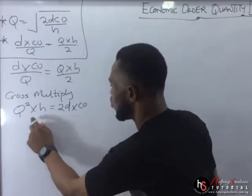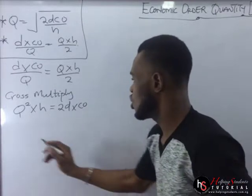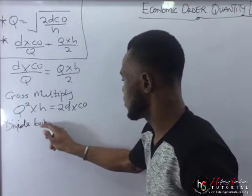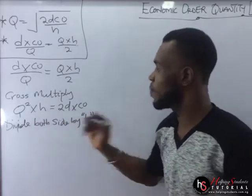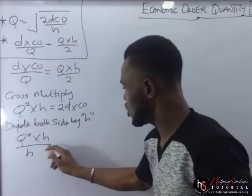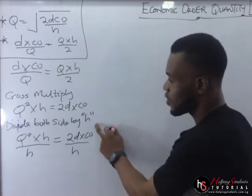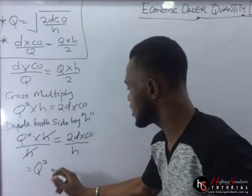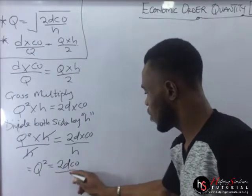Now the next thing we do here is we need Q to stand on its own. We're going to divide through by H so that we can eliminate this H. So we'll divide both sides by H. We'll have Q squared times H divided by H, which is equal to 2D times CO divided by H. H cancels H, and we're left with Q squared, which is equal to 2DCO over H.